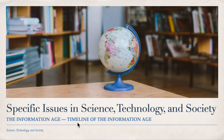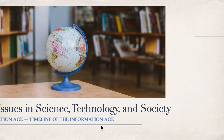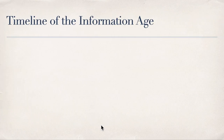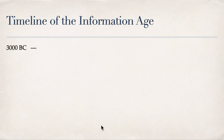This is the timeline of the information age. We're going to start in 3000 BC, all the way going to nearly 2000. So in 3000 BC, what is the first part of the information age?